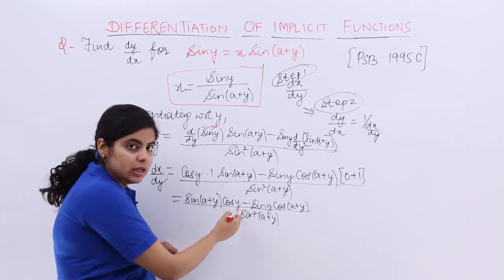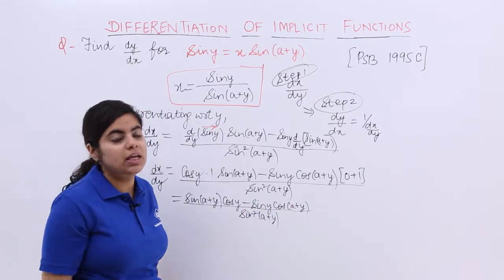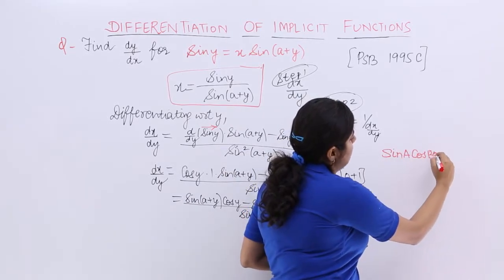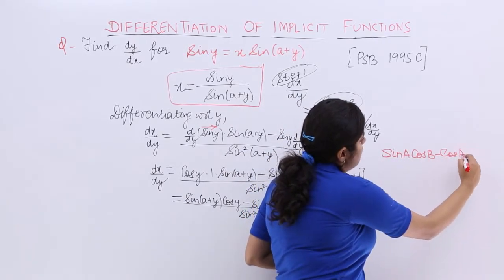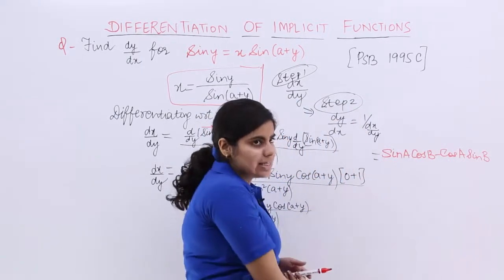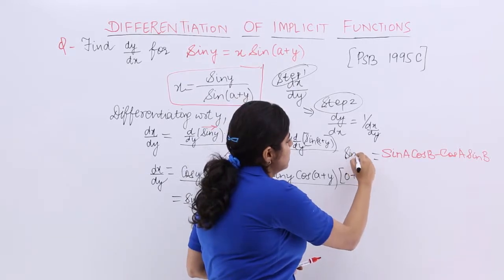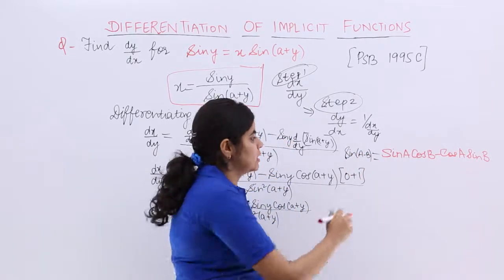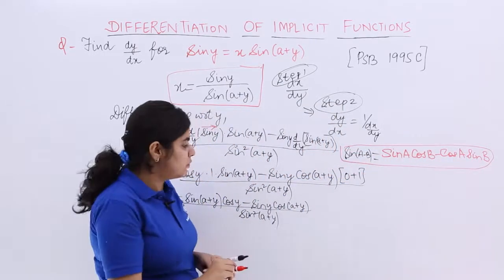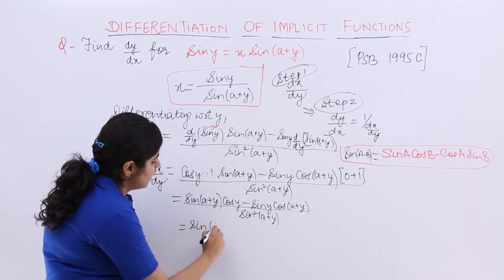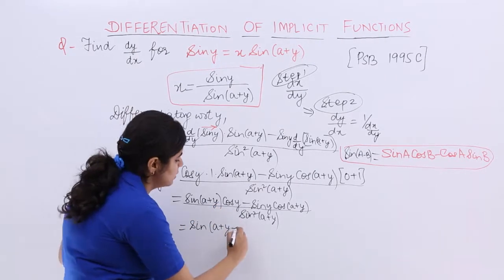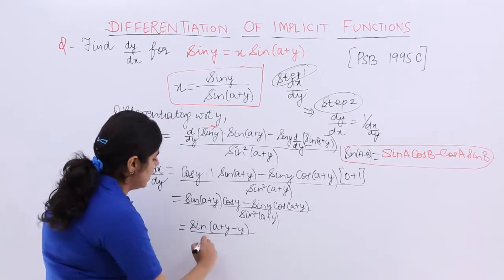I write the formula here again: sin a cos b minus cos a sin b. What is the formula of this? Yes, it is sin(a-b). We will be using this formula here. So it becomes sin of the first term minus the second term, which is sin(a+y-y), upon sin square(a+y).